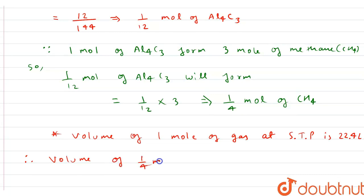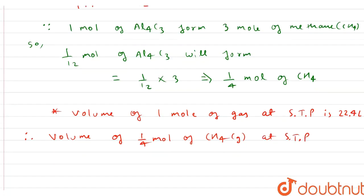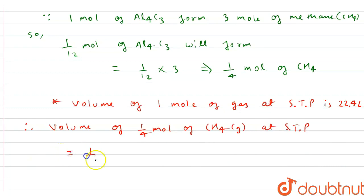1 by 4 into 22.4, which can be written as 0.25 into 22.4, and on multiplying these two, we will get 5.6 liter of volume at STP.